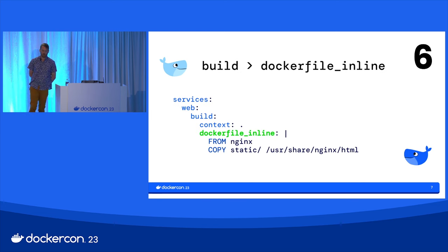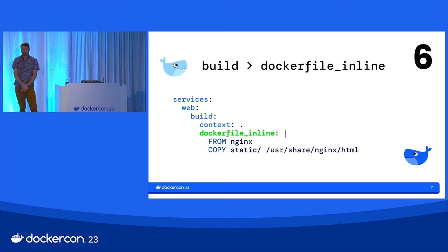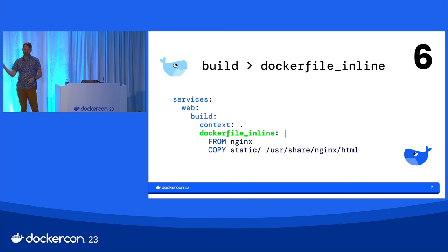Last thing on build: Dockerfile inline. You can write a Dockerfile directly in your compose file. I'm not suggesting you stop writing separate Dockerfiles, but for a small case like getting a static folder into Nginx, you don't need a complicated Dockerfile — you can write a little snippet in your YAML. Maybe you're programmatically generating the YAML, or there's a Dockerfile in the repo you don't want to use — this is another flexible option.